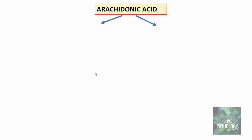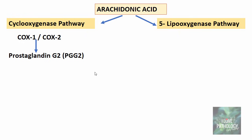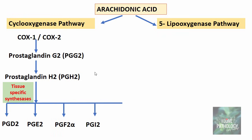Arachidonic acid is metabolized via two pathways. One is the cyclooxygenase pathway, brought about by cyclooxygenase 1 and cyclooxygenase 2. Arachidonic acid is converted to prostaglandin G2 by these cyclooxygenases, which further gets converted to prostaglandin H2. With the help of tissue-specific synthases, prostaglandin H2 is further converted to prostaglandin D2, E2, F2-alpha, prostaglandin I2 (otherwise called prostacyclin), and lastly thromboxane A2.